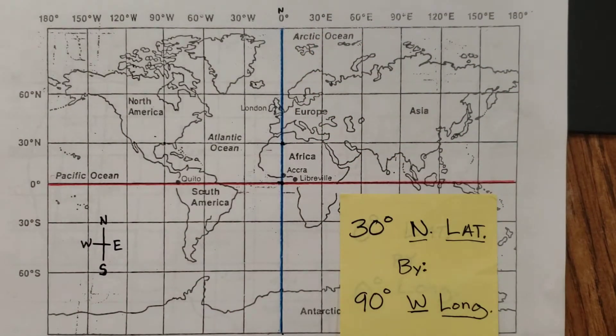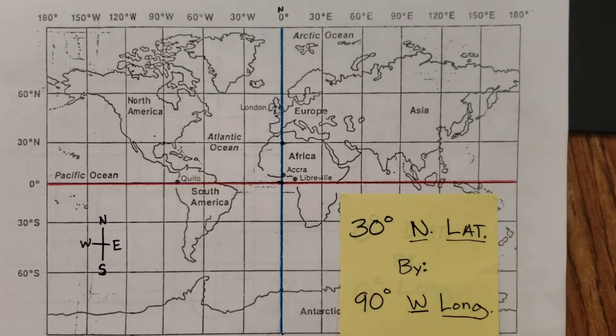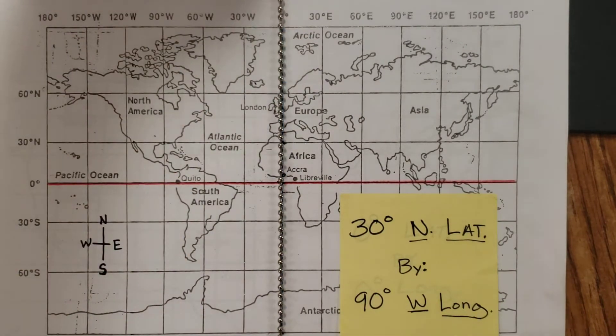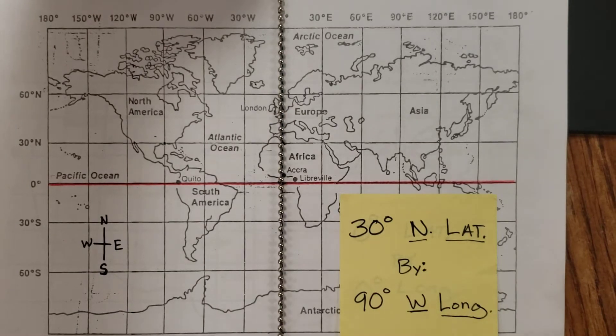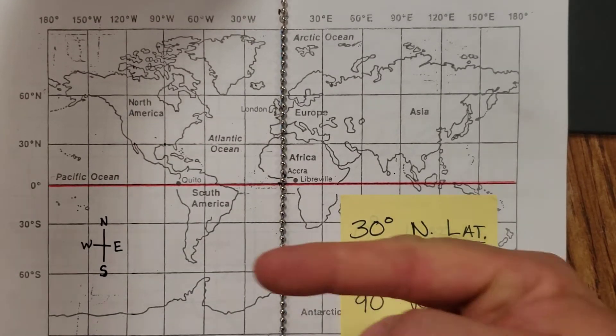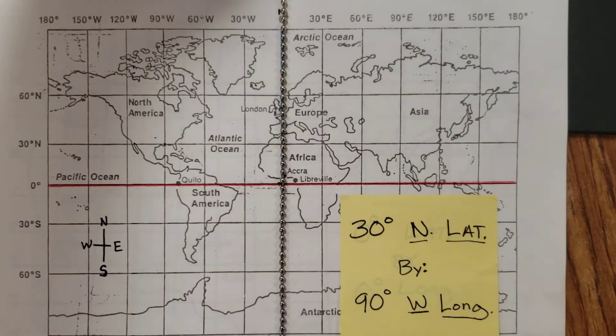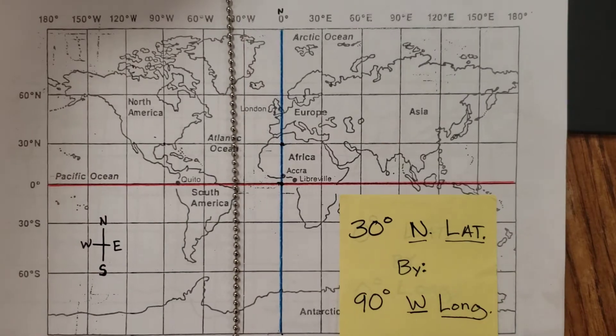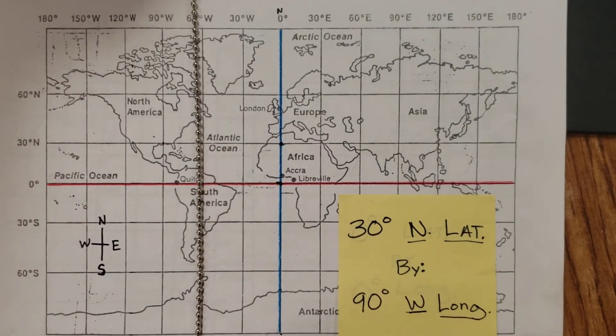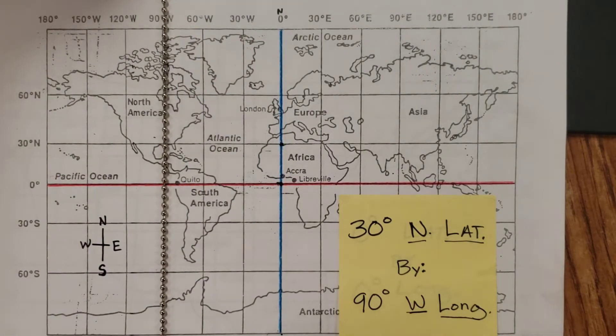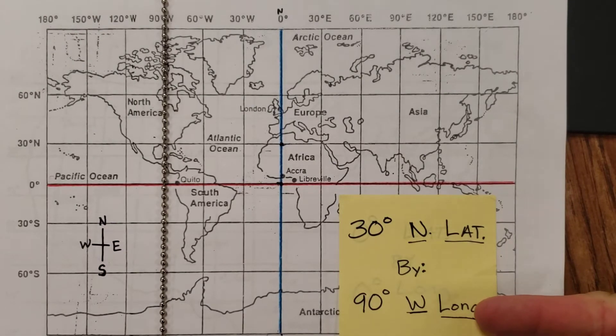So let's start with our longitude line of zero degrees longitude, our prime meridian, and we will go west that way 90 degrees. There's the 30 degree line, the 60 degree line, and the 90 degree line. So we found a longitude line west of the prime meridian 90 degrees.